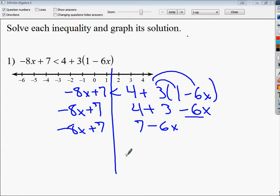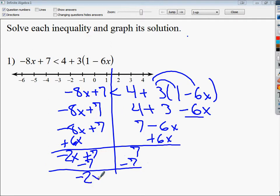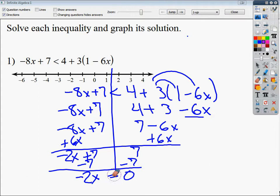I get 7 minus 6x. I tend to move variable terms from here, just because it gives me a better idea of what's happening in my problem. End up with negative 2x plus 7. I subtract 7 from both sides. End up with negative 2x is, I don't know why I put equals there. I was just thinking about something else because it's not an equation, it's an inequality, which is the problem.